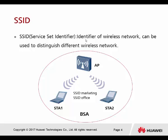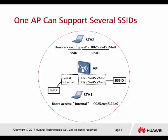We can assume the SSID is a name for the wireless access. For one AP, we can create different names for wireless access. All the users — the STA, which stands for station — can choose which SSID they're going to connect to. One AP can support several SSIDs, meaning one AP is not limited to broadcasting only one SSID; we're allowed to create multiple SSIDs on one AP.